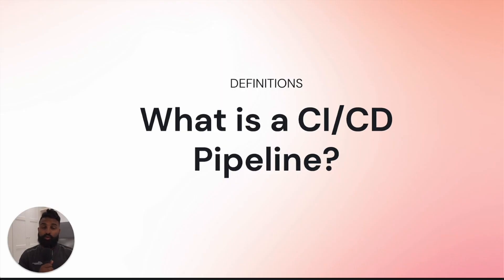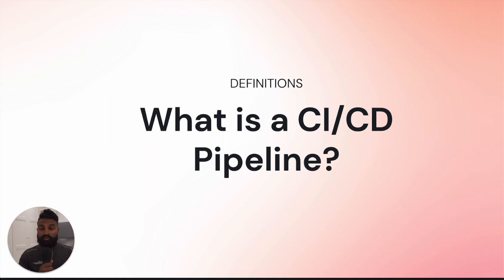The first definition we need to understand is what is a CI-CD pipeline. CI stands for Continuous Integration, CD stands for Continuous Deployment or Continuous Delivery. Depending on who you talk to in the DevOps space, they might give you a different definition, but at the end of the day, what it really means is: if you have an application, let's say facebook.com, and you want to deploy any new changes or new features to it, you can do it two ways.